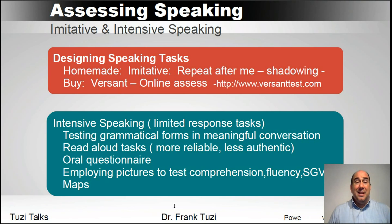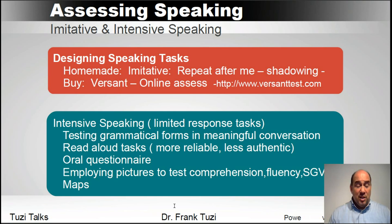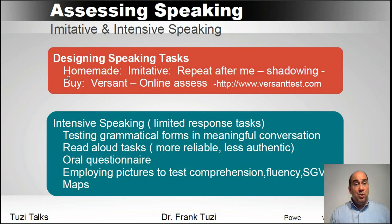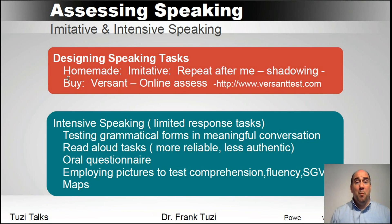At the lower level, we're going to be dealing with imitative or intensive types of speaking activities — activities focusing on the smaller, easier-to-complete tasks. When you're designing speaking tests, you can do homemade activities. An example is the repeat-after-me or shadowing approach, where all through class your students simply repeat what you say. They're easy to imitate, and that's the homemade version.